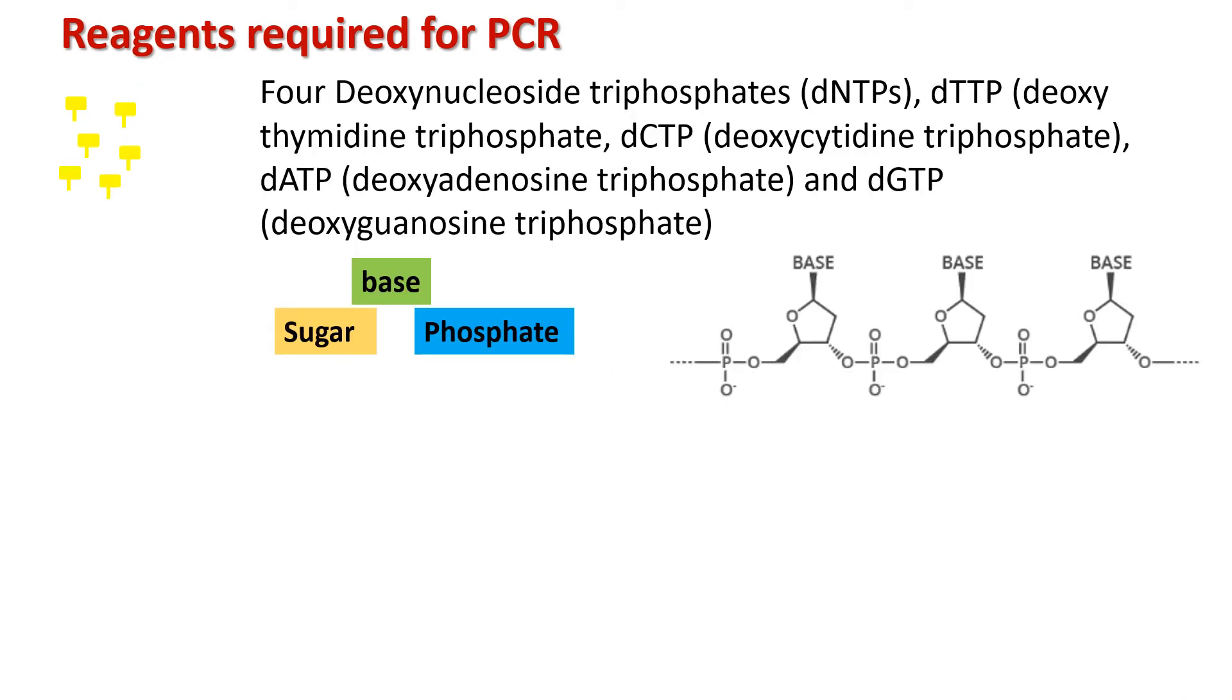The next important thing required for PCR is DNTPs. This is the structural unit of DNA, which is called deoxynucleoside triphosphate. There are four types of DNTPs. First is dTTP, which is deoxythymidine triphosphate. Next is dCTP, which is deoxycytidine triphosphate. Next is dATP, which is deoxyadenosine triphosphate, and the last is dGTP, which means deoxyguanosine triphosphate. This is the combination of sugar, base, and phosphate.